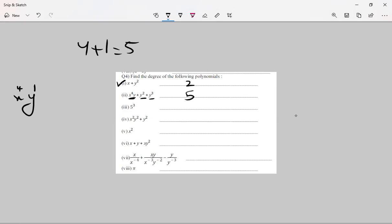5 to the power 3 is 125, there is no degree. No degree. There is no variable actually, it's a constant number.